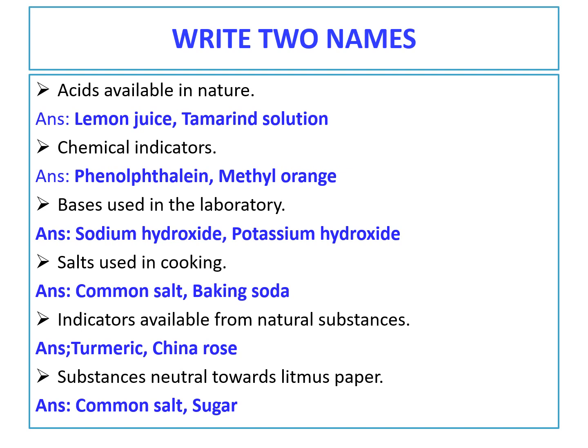Next, bases used in the chemistry laboratory — write any two. The names are: sodium hydroxide and potassium hydroxide. Next, salts used in cooking. In our house for cooking purpose, any two salts: common salt, that means sodium chloride, and baking soda.